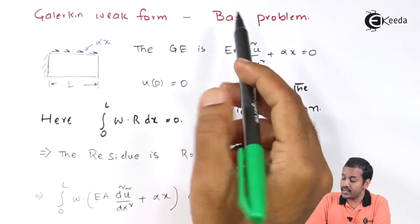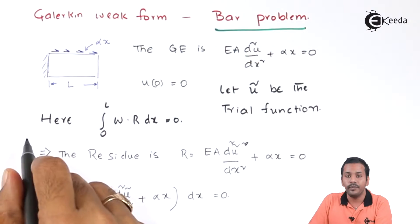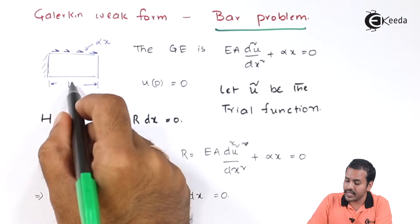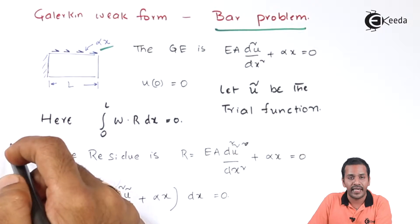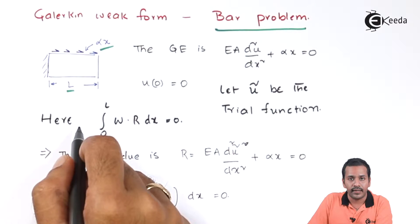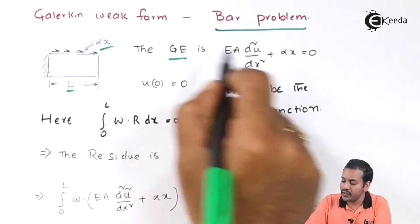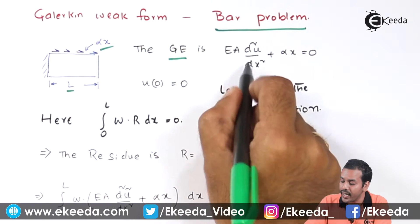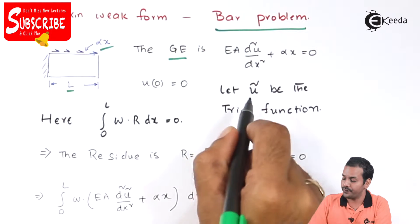Let us take our standard example — a bar problem. We have a load of alpha·x applied, and the span of the bar is capital L. The governing equation for this bar is given as d²u/dx² + αx = 0.